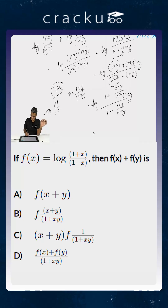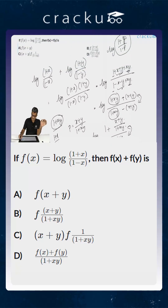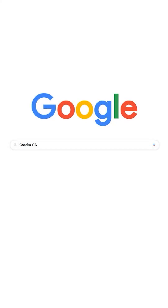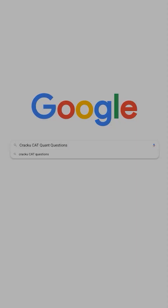So this is basically equal to f of (x + y)/(1 + xy), which is option B. For more CAT quant questions, Google search 'Crack the CAT quant questions'.